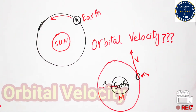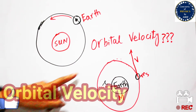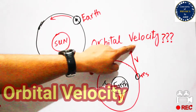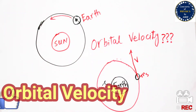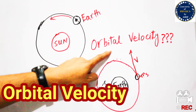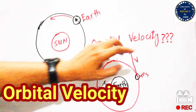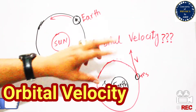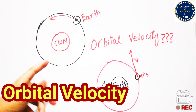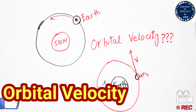Hi guys, welcome to my YouTube channel. In this video we will briefly discuss orbital velocity. First of all we need to understand what is orbital and what is velocity. Orbital means orbit or circular path, and velocity has a unit of meters per second.